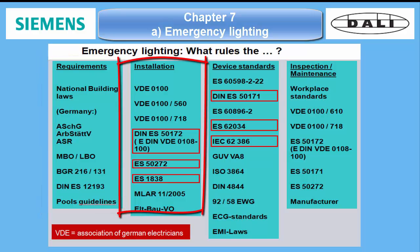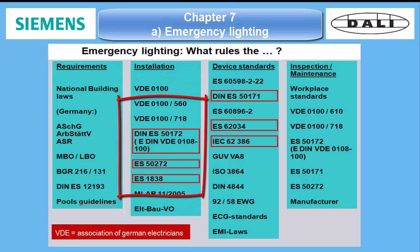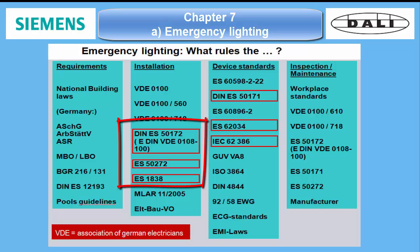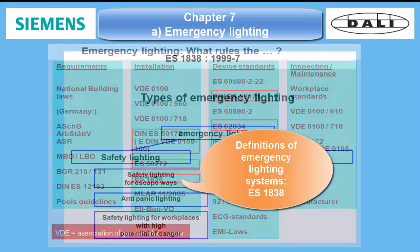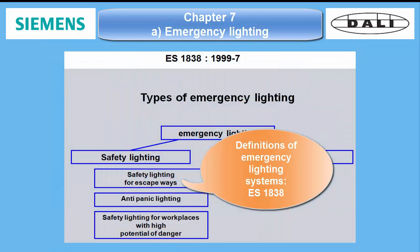Then, the installation standards need to be heeded. With European standard EN 50172, EN 5272, and European standard EN 1838, we have three standards which apply here among others. The definitions of emergency lighting systems are to be found in EN 1838.